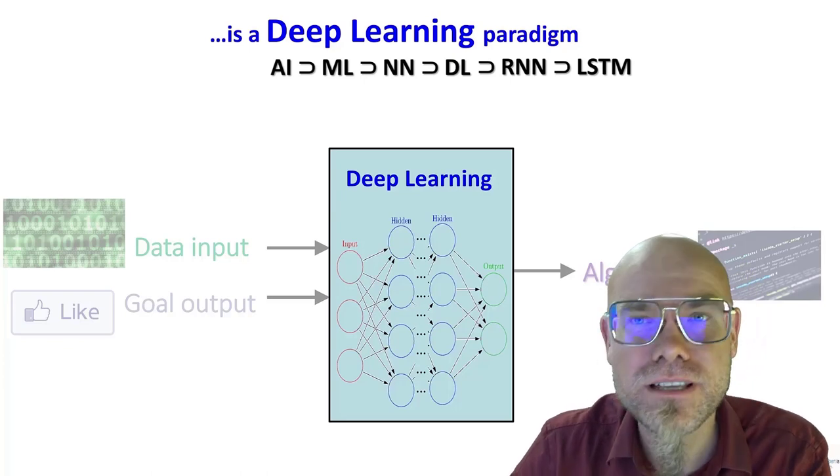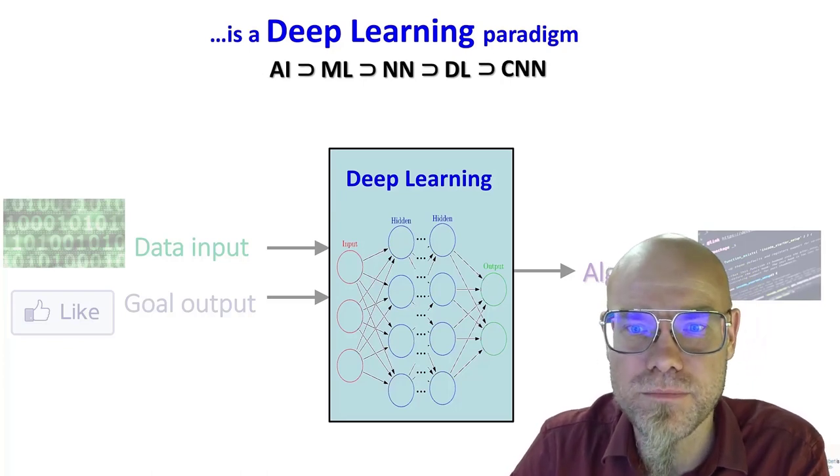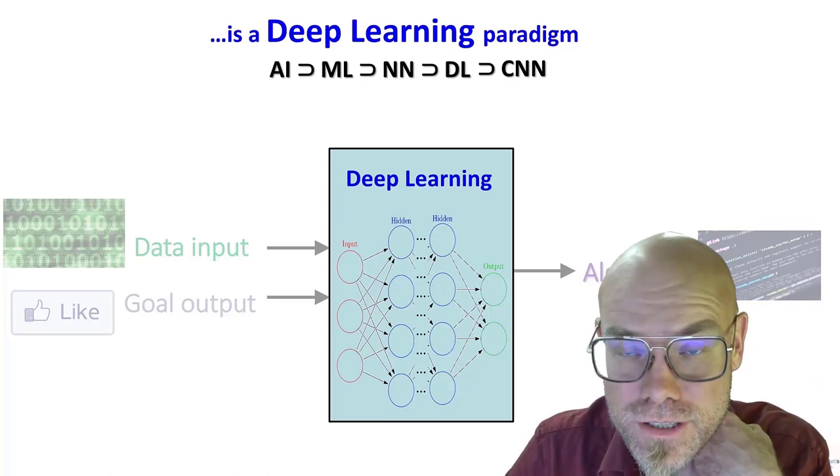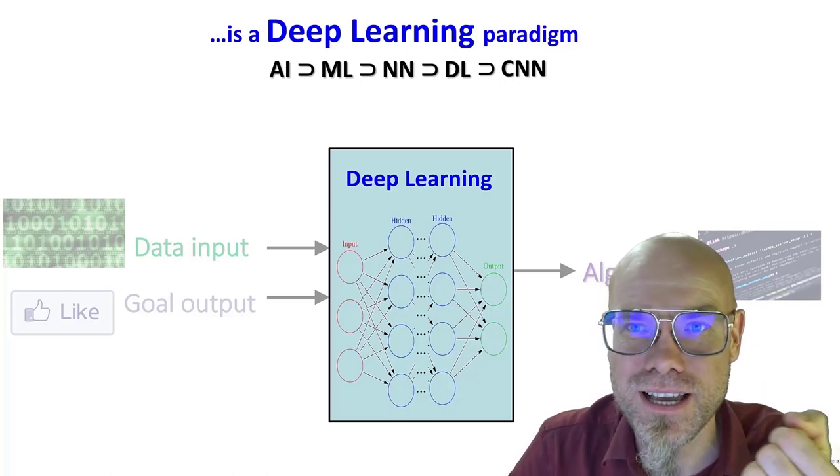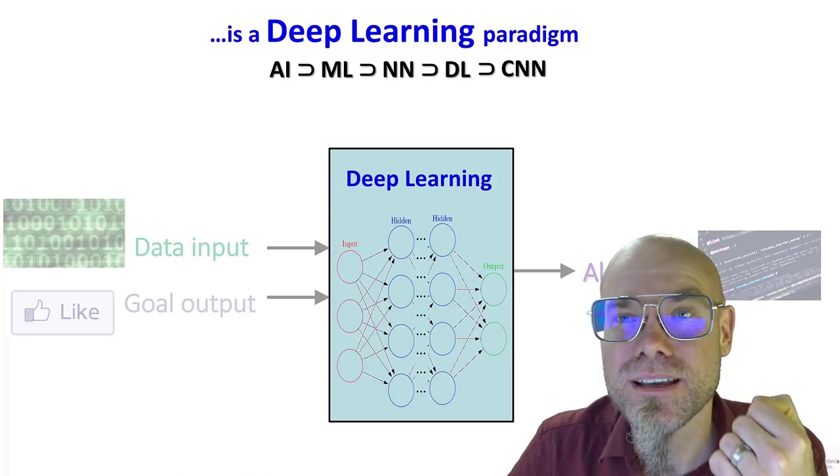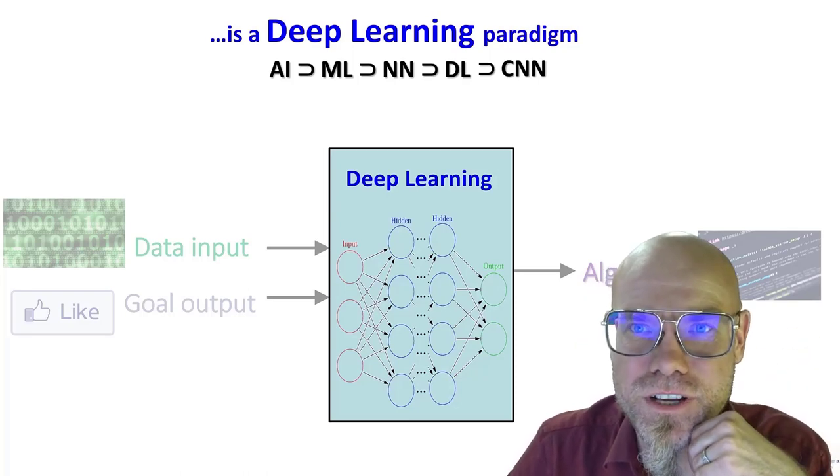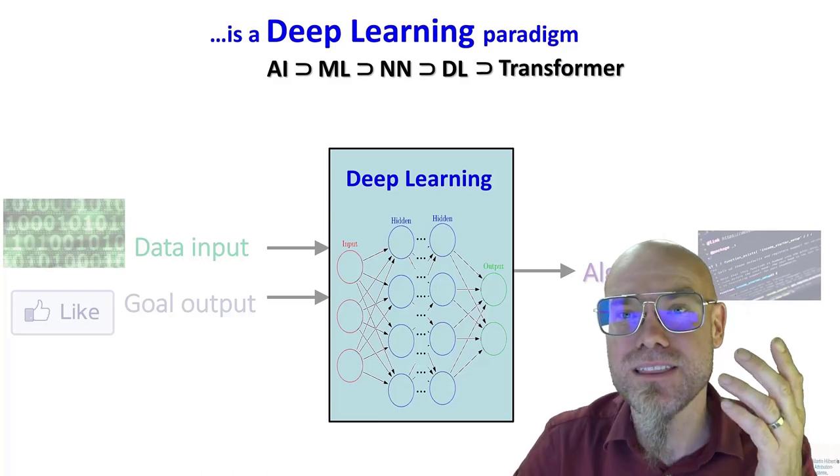There are also other ones, for example convolutional neural nets which are used for image recognition. So when you speak with a digital device, it's usually a recurrent neural net. And when you do something with images, usually a convolutional neural network.